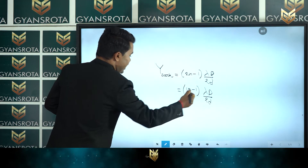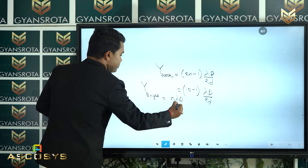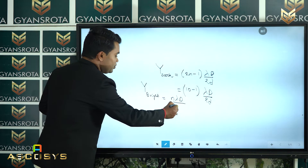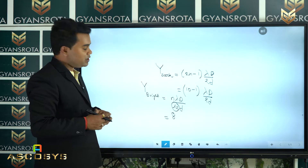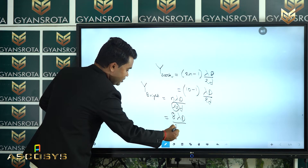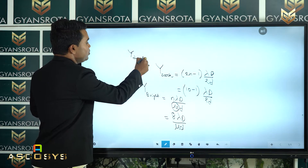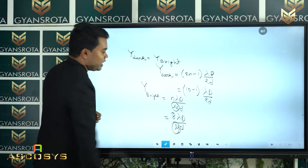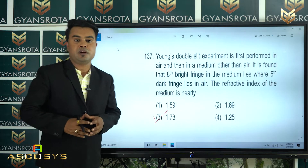For the bright fringe in a medium, the formula is nλD/2d, but since it is in a medium, it becomes nλD/(2μd) where μ is the refractive index. The 8th bright fringe gives 8λD/(2μd). Since both fringes coincide, we equate Y_dark = Y_bright. Equating the two expressions and solving for μ gives a value of 1.78, which is the correct answer.